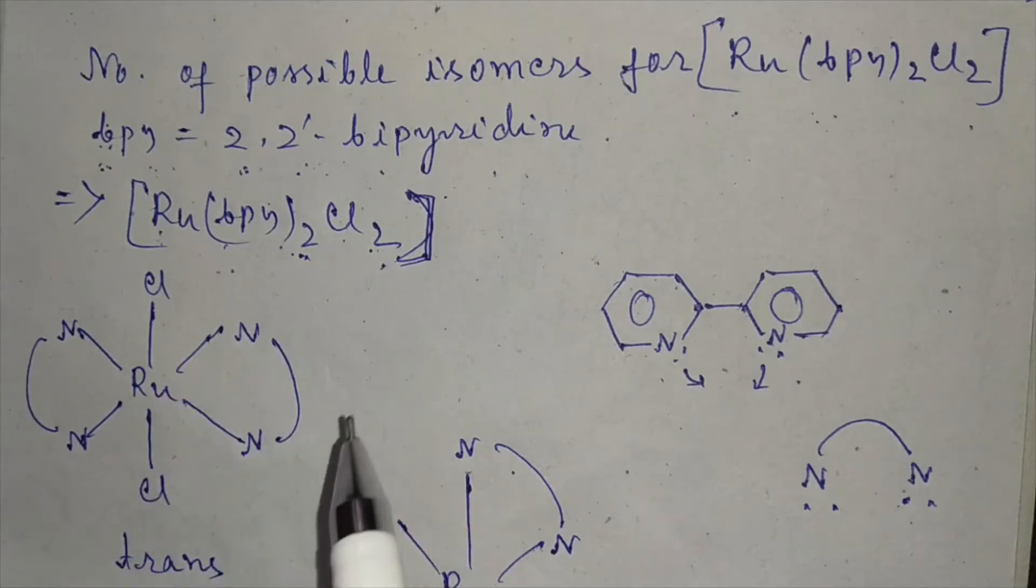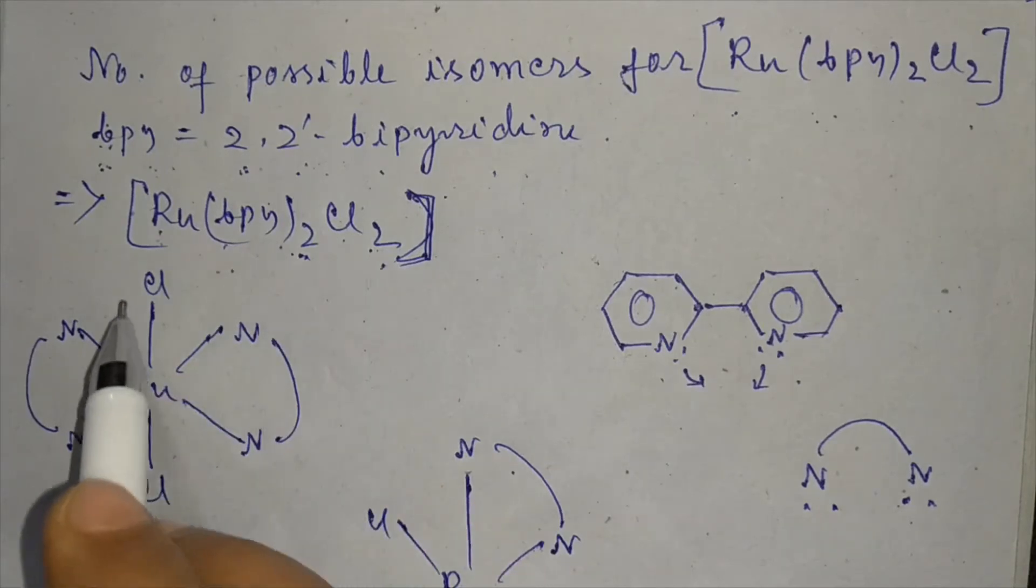The arrangement of ligands is possible in two ways: the Cl atoms may be in trans position, so the structure will be like this, or the Cl atoms may be in cis position, so the structure may be like this.